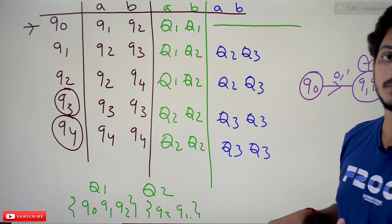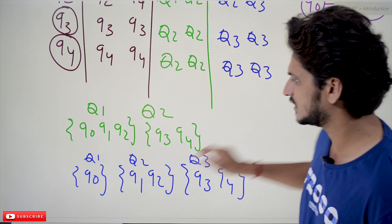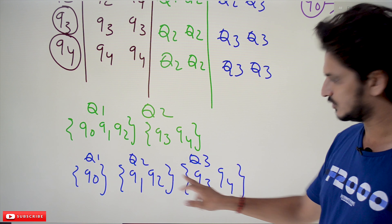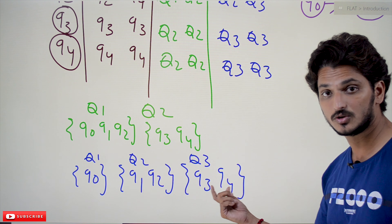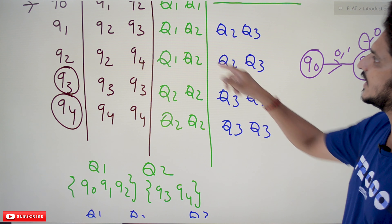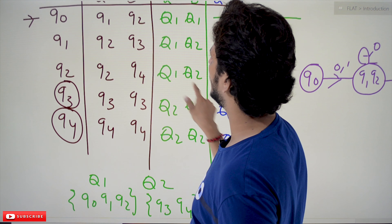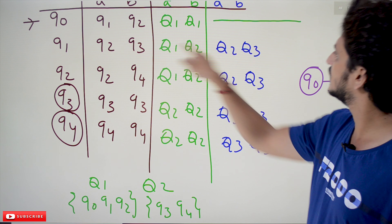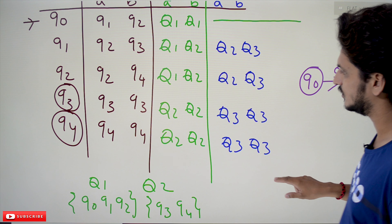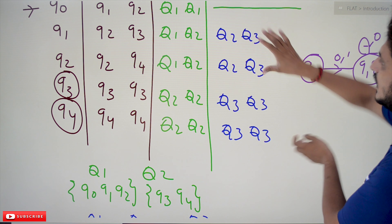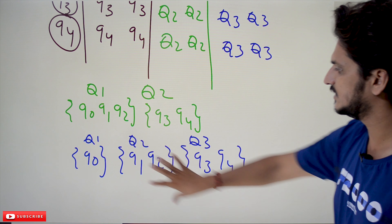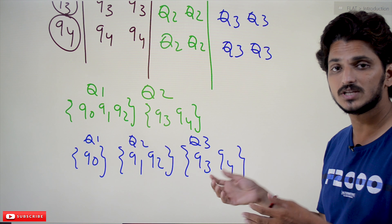We repeat the process. No need to process Set Q0 since it has only a single element — no division possible. For Set {Q1, Q2}: applying A, Q1 goes to Q2 which belongs to Set Q2; Q3 belongs to Set Q3. Values are Q2, Q3 and Q2, Q3 — they are similar. For Set {Q3, Q4}: also similar. So the sets do not divide further. Our final sets are {Q0}, {Q1, Q2}, and {Q3, Q4}.